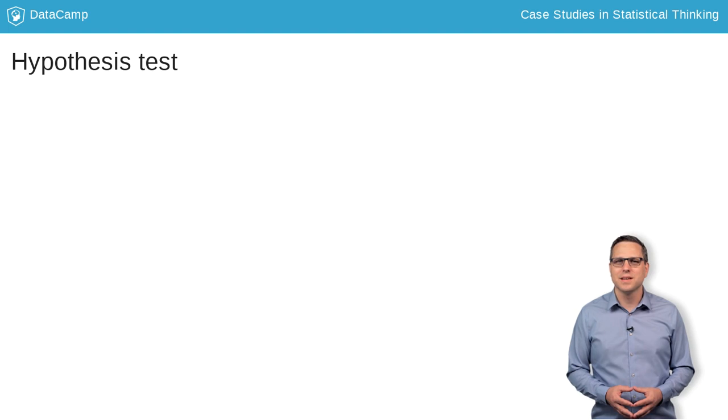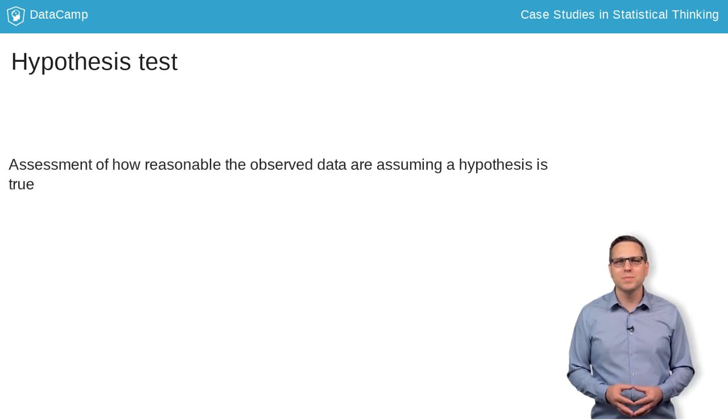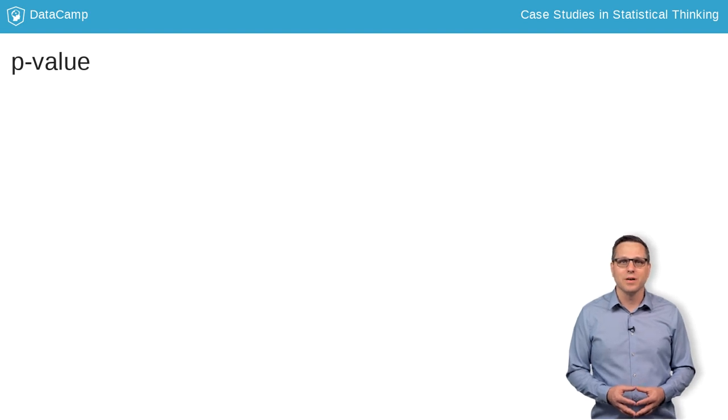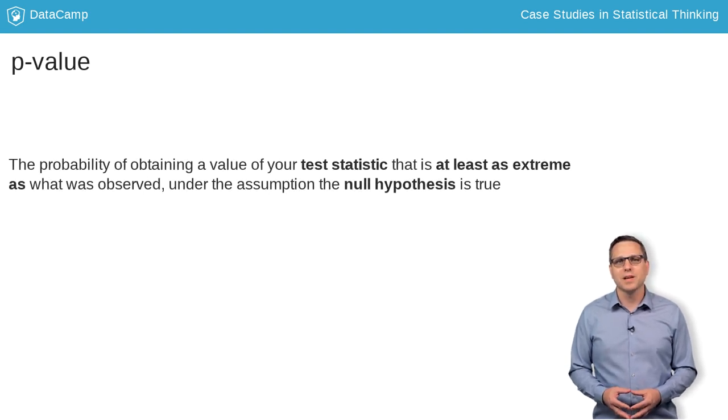A hypothesis test is an assessment of how reasonable the observed data are, assuming a hypothesis called the null hypothesis is true. The result of a hypothesis test is a p-value, defined as the probability of obtaining a value of your test statistic that is at least as extreme as what was observed, under the assumption that the null hypothesis is true.